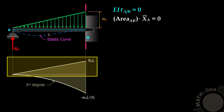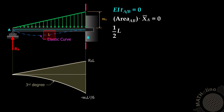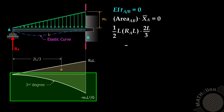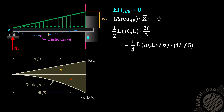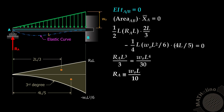For the triangular moment diagram: one-half times base L times altitude RAL, with centroid from A at two-thirds of L. Minus the third-degree spandrel: one-fourth times base L times W-naught L squared over 6, with centroid from A at four-fifths of L, equals zero. This gives RA times L cubed over 3 equals W-naught L to the 4th over 30, so RA equals W-naught times L over 10.